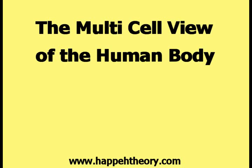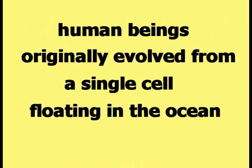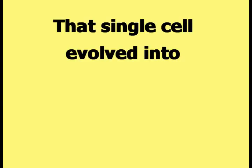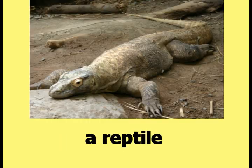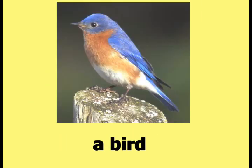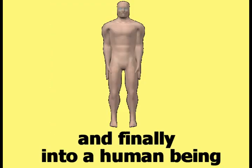This video is about the multi-cell view of the human body. According to Darwin's theory of evolution, human beings originally evolved from a single cell floating in the ocean, similar to the example shown in this picture. That single cell evolved into a fish, an amphibian, a reptile, an insect, a bird, a mammal, and finally into a human being.